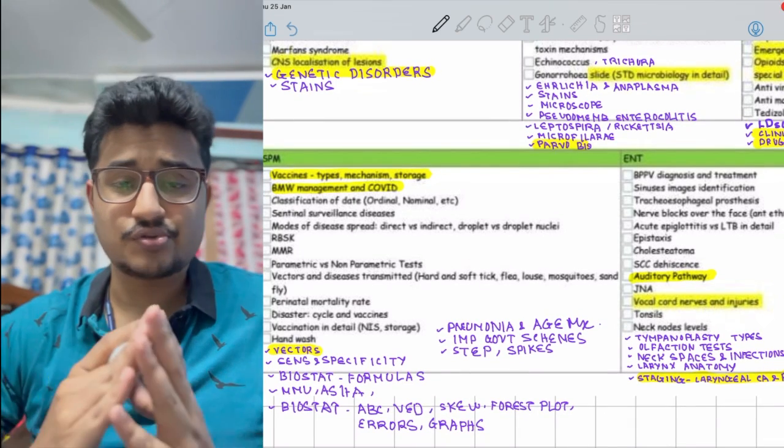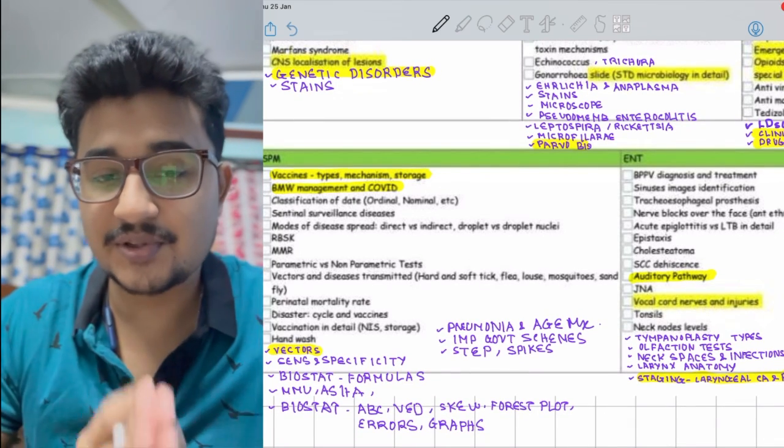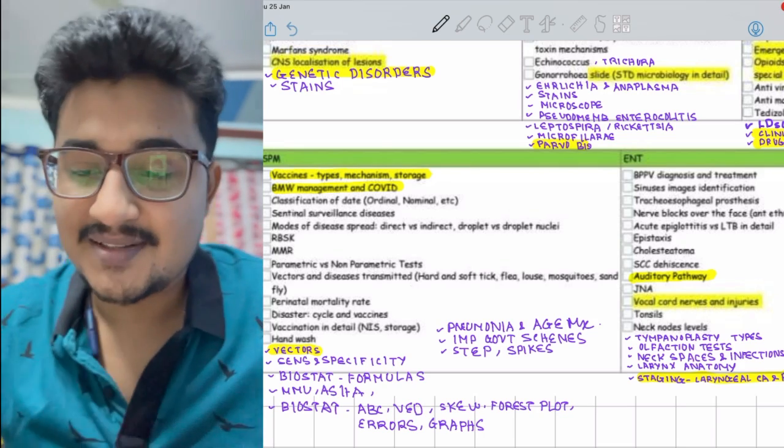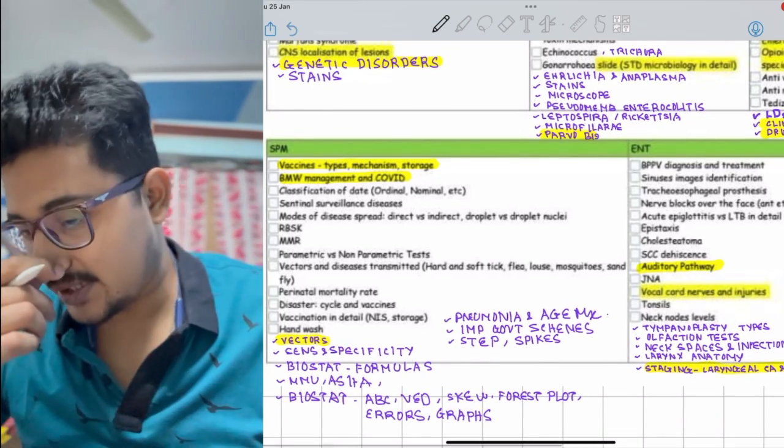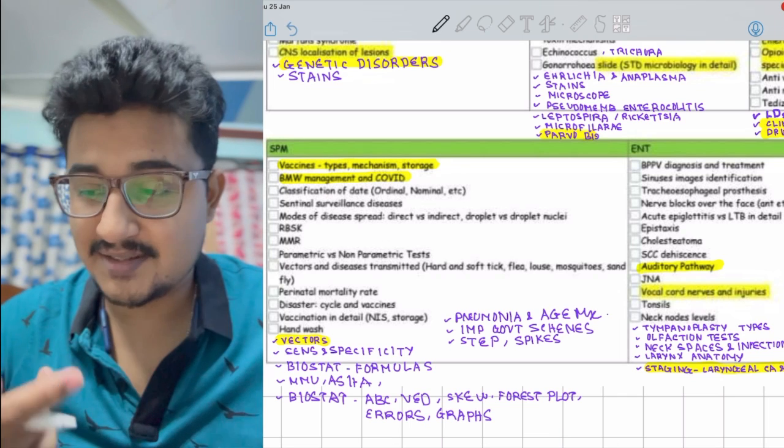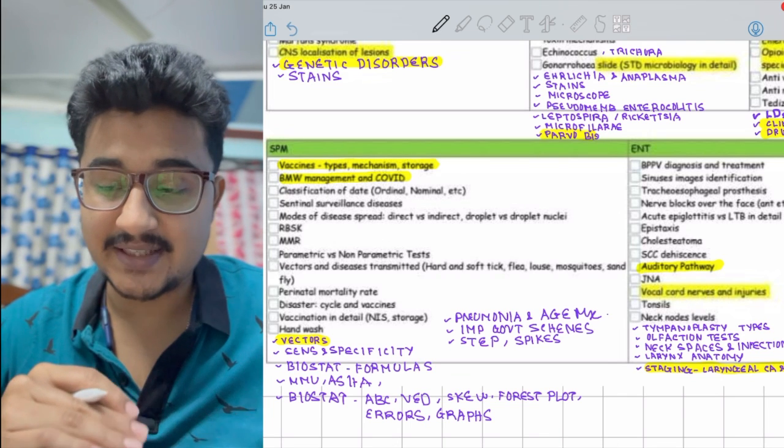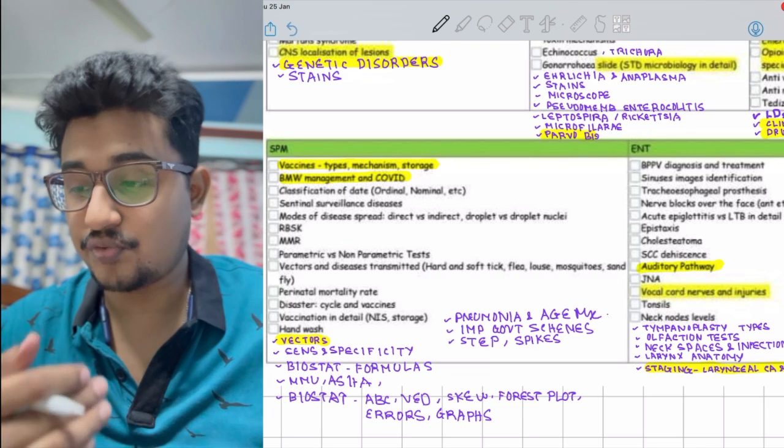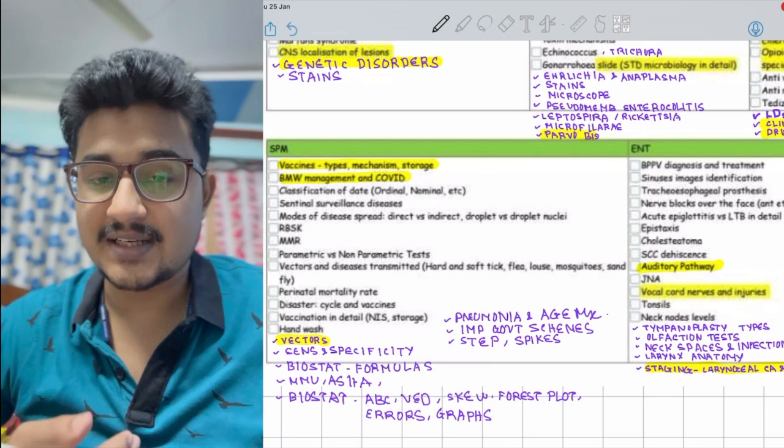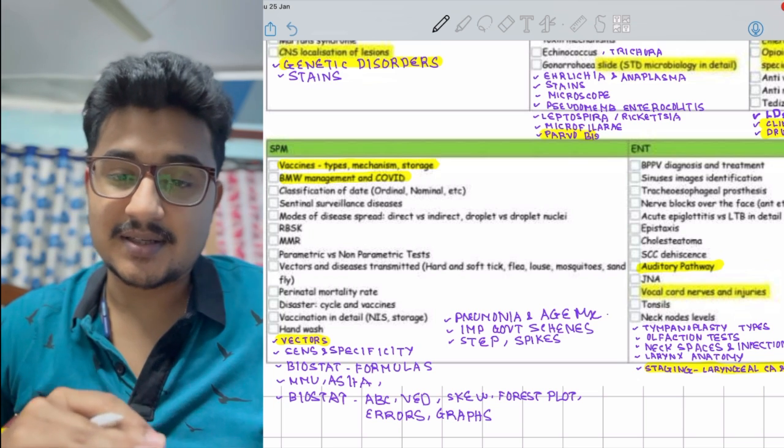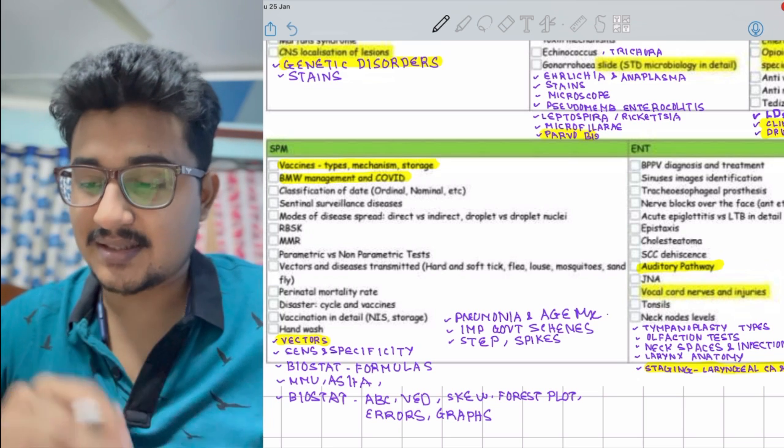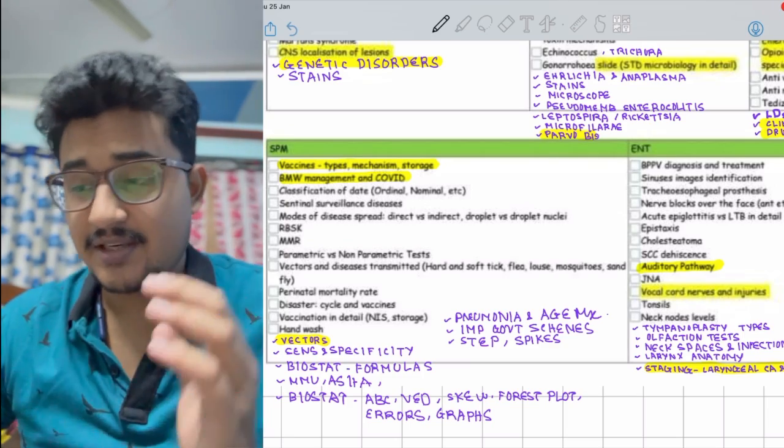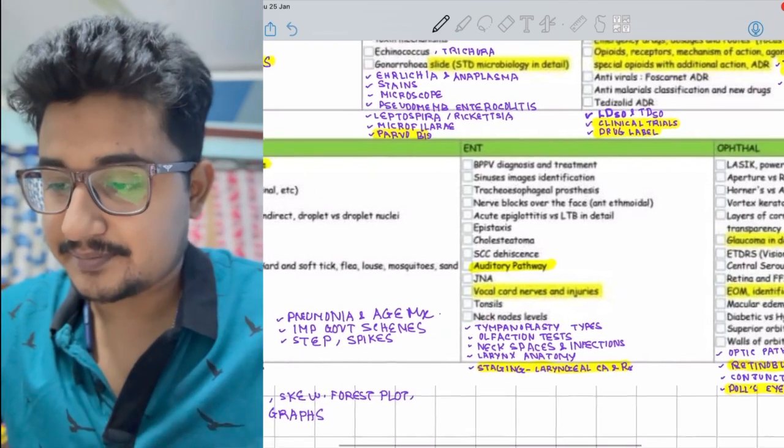Now coming to PSM - the super super duper important subject for INICET perspective. Ten questions from biostatistics only, I guarantee you. Vaccines, biomedical waste management - this time factors are more commonly asked, but biostatistics is the main thing. In biostatistics: ABC-VED, skew, forest plot, quantitative-qualitative data, chi-square, t-test, errors, various kinds of graphs. These are important, and important government schemes for NEET PG perspective you should remember.